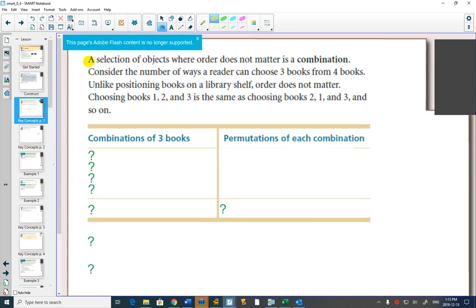If you take out your highlighter, you can highlight what the definition of a combination is. A combination is a selection of objects where the order doesn't matter.